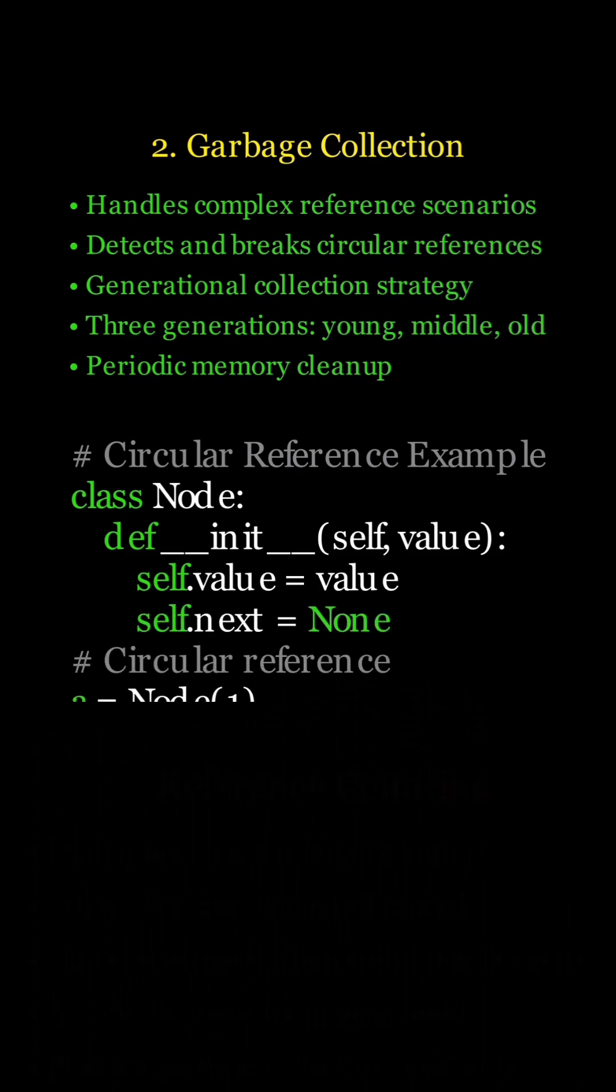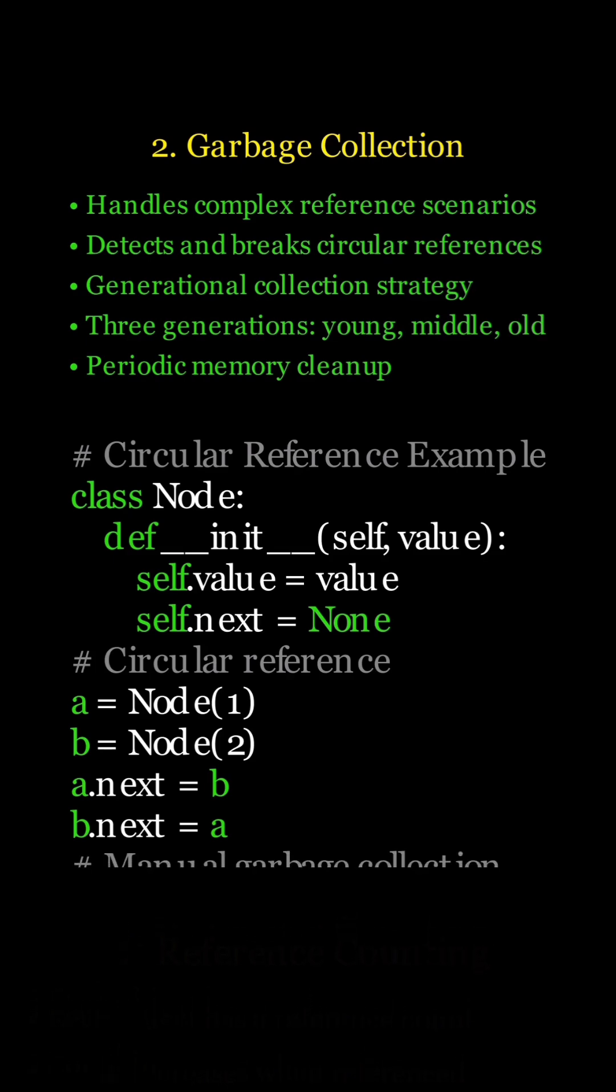where objects reference each other in a loop. Traditional reference counting would fail, but Python's garbage collector can identify and clean up such structures. In this example, we create a simple linked list where two nodes point to each other. By calling gc.collect, we manually trigger Python's garbage collection to handle these complex reference scenarios.